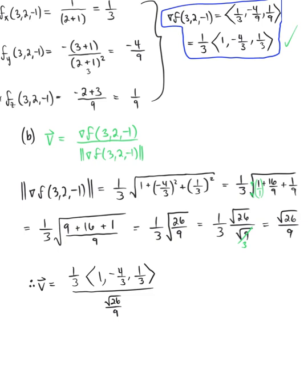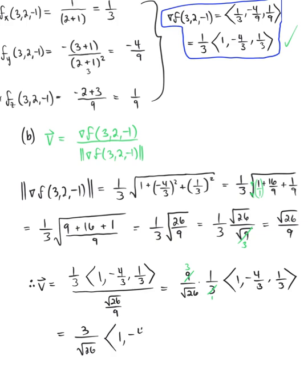Since fractions in the denominator flip when we multiply by their reciprocal, we get 9 over the square root of 26, multiplied by 1 third, multiplied by the vector (1, -4/3, 1/3). We know 3 goes into 9 three times, so our simplified final answer is 3 over the square root of 26, multiplied by the vector (1, -4/3, 1/3). This is the unit vector pointing in the direction of maximum increase or steepest ascent.